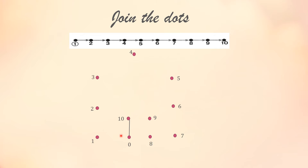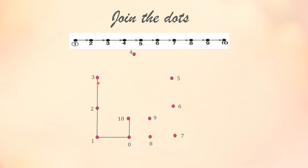Let's begin and see what comes after joining the dots. This is number 0, from 0 to 1. After 0 to 1, what comes after 1? 2. So you will join from 1 to 2, then 2 to 3.